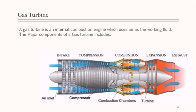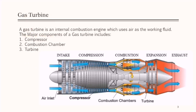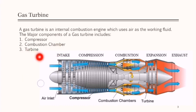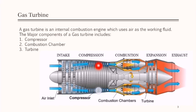A gas turbine is an internal combustion engine which uses air as the working fluid. The major components of a gas turbine are: a compressor, then a combustion chamber, then a turbine. Air enters the compressor, which acts like a fuel pump, and the air gets compressed to high pressure. In gas turbines, there are two pressures — the ambient inlet pressure and the compressed pressure.